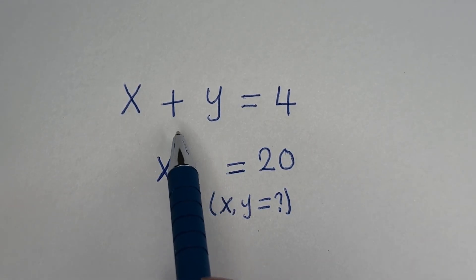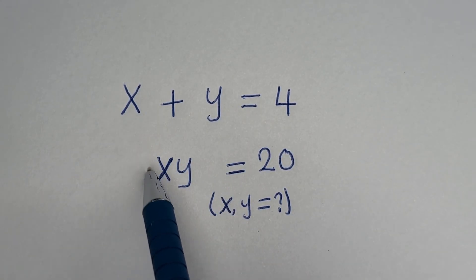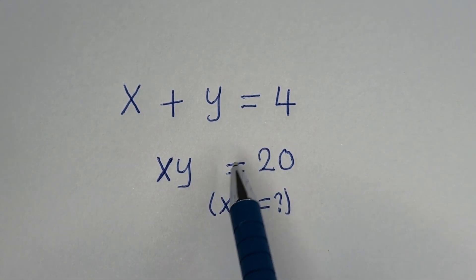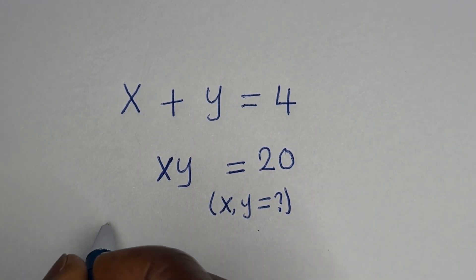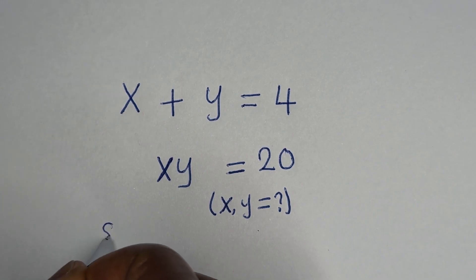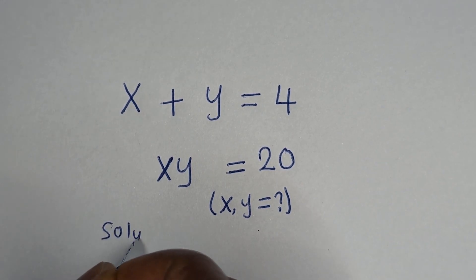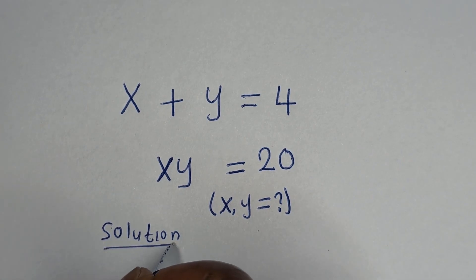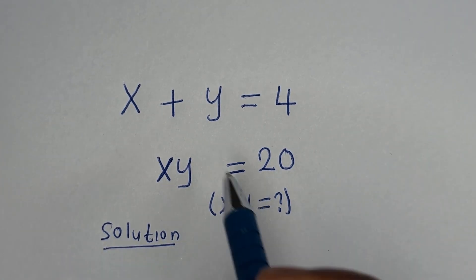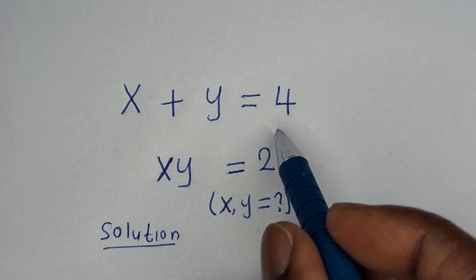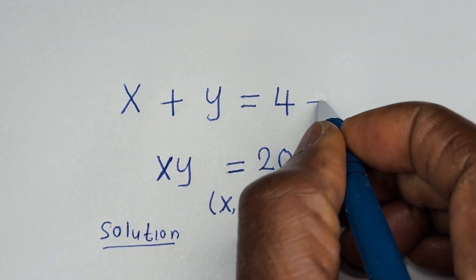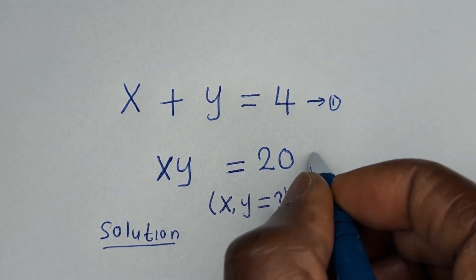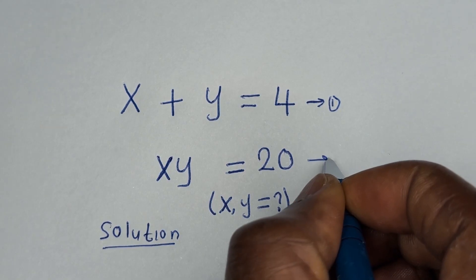Hello, you are welcome. How to solve for x and y in this equation: x plus y is equal to 4, and xy is equal to 20. Solution.